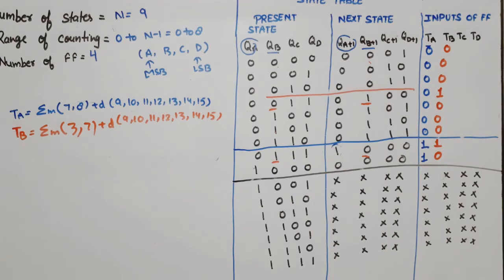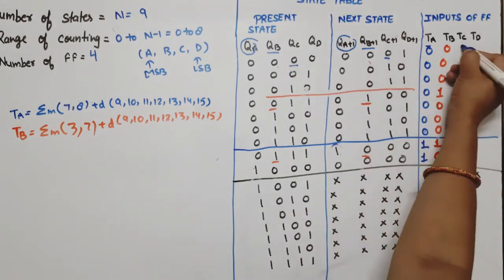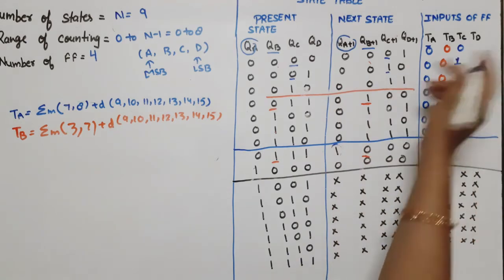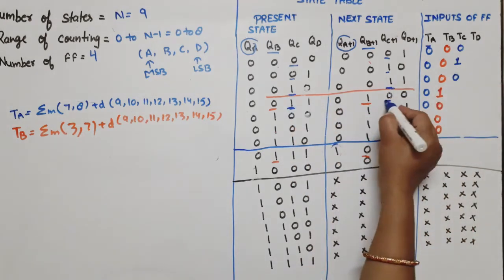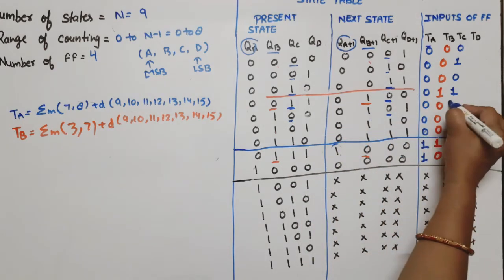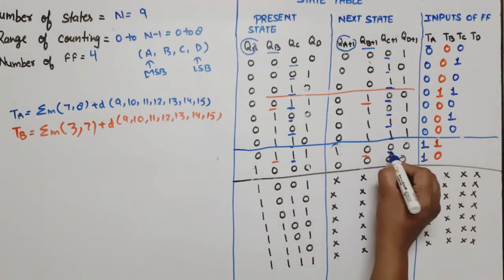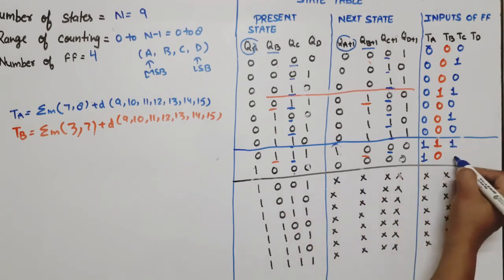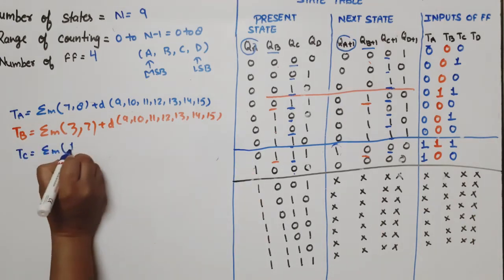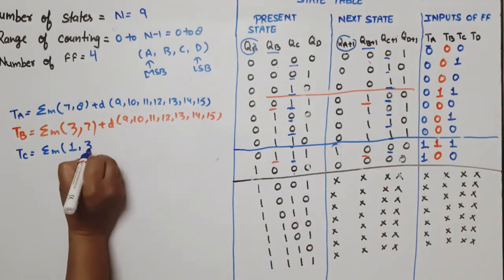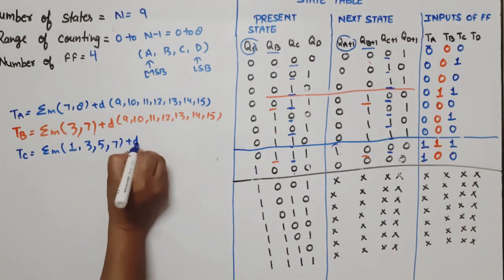For TC, we consider QC and QC_next. QC transitions give an alternating pattern: same (0), change (1), same again, change again. TC equals 1 at minterms 1, 3, 5, and 7, giving TC = summation of minterms 1, 3, 5, 7, plus don't-cares at 9 through 15.